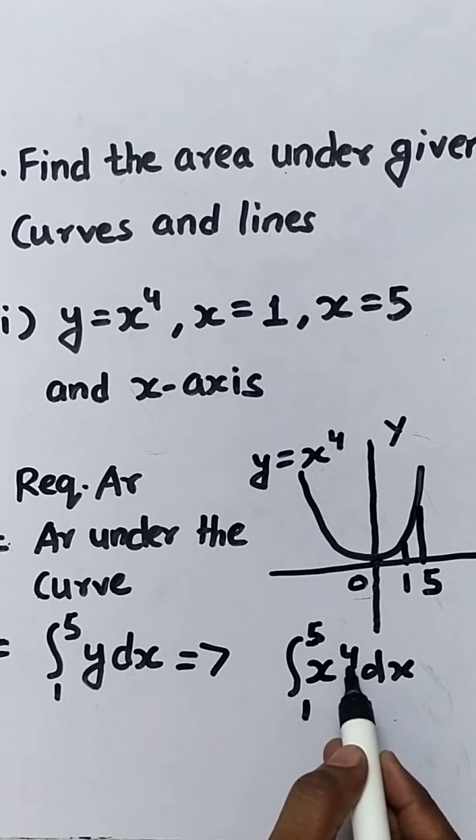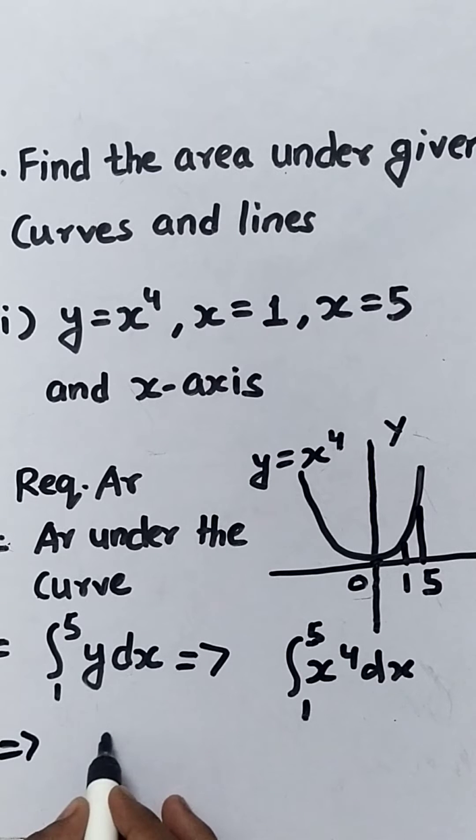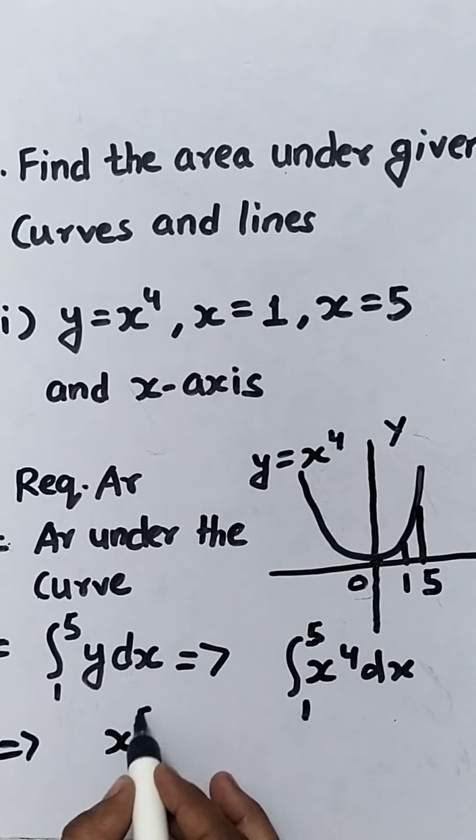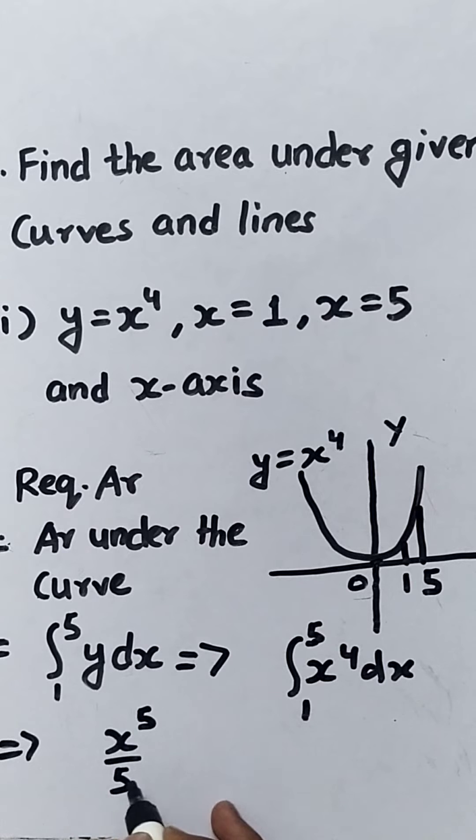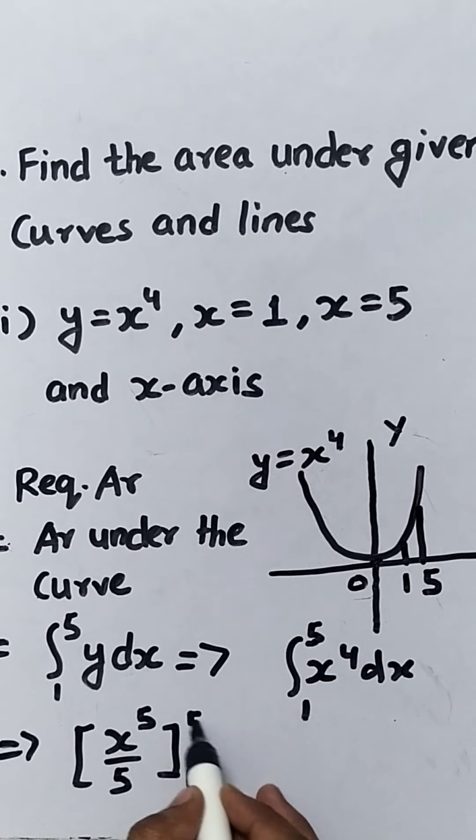Now we have to integrate x to the power 4. It is x to the power 4 plus 1, which is 5, upon 4 plus 1 again, 5. Put the limit - this is lower limit 1 and upper limit 5.